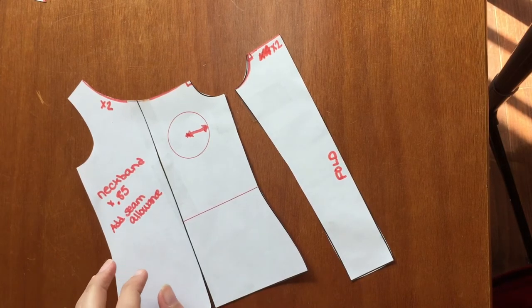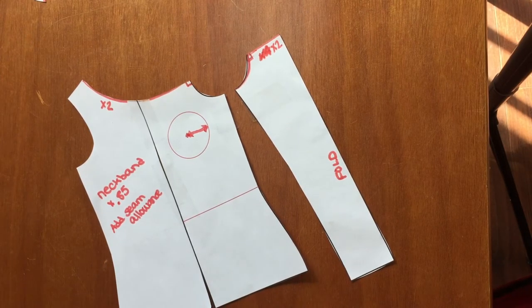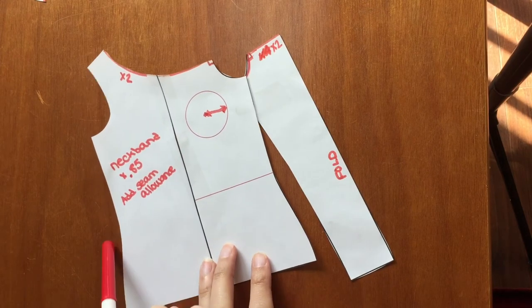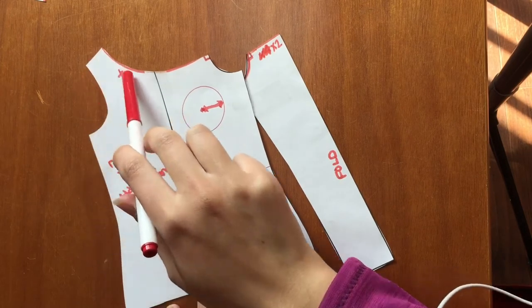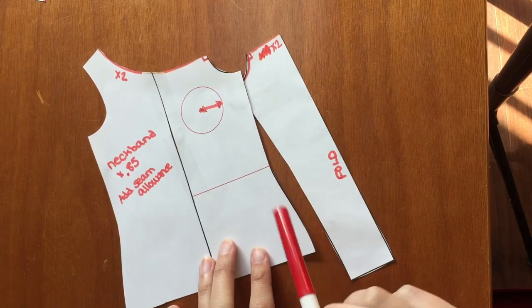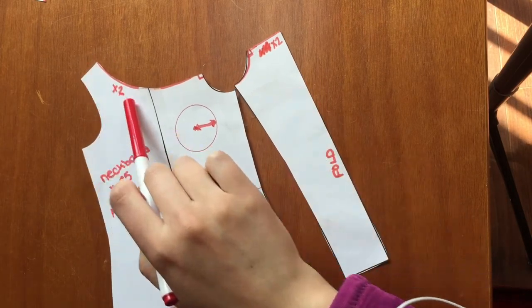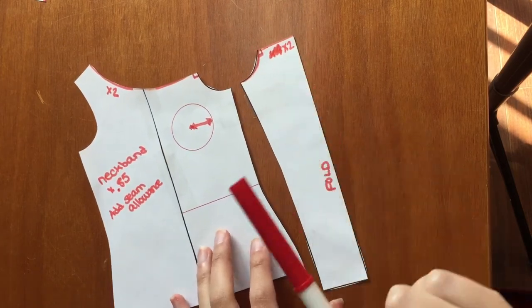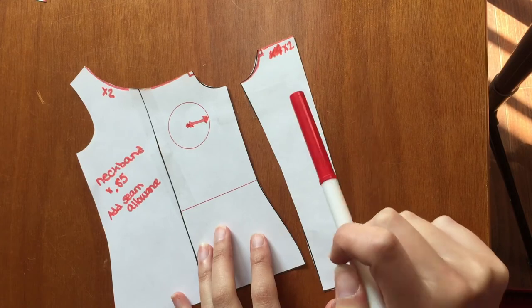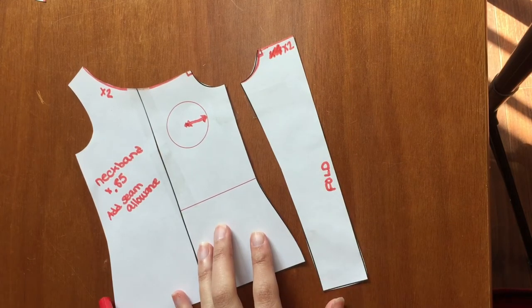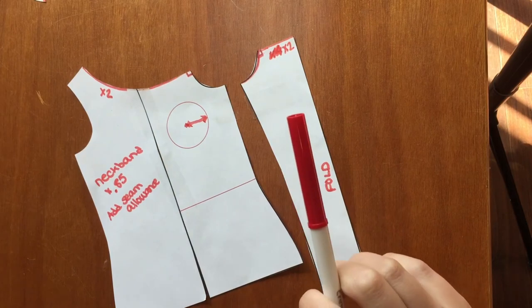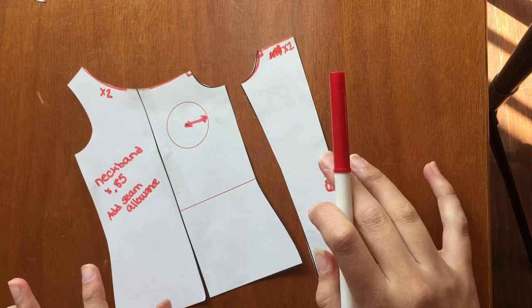One thing I forgot to mention way at the very beginning, and I will go back and put a caption there, is you want to make sure you've trimmed off your seam allowance before doing this hack. So that you can get a proper neckband measurement and proper fitting of under the arm. And then when you go to sew it up, or cut out your fabric, add your seam allowance back in everywhere. Yes, I know it's a hassle step, but you'll be happy you did in the end.